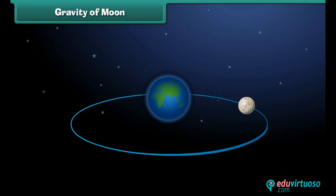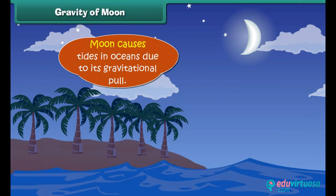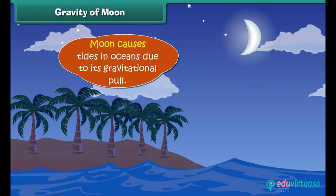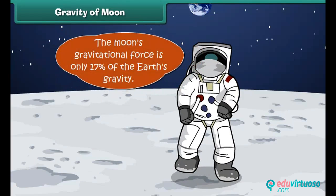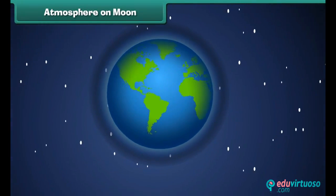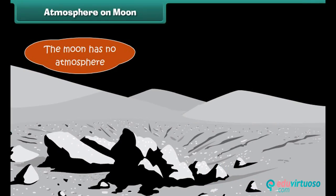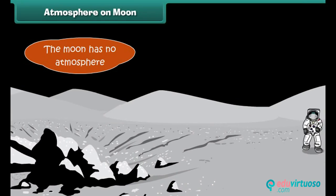Our moon is large enough to cause tides in the oceans due to its gravitational pull. You may be surprised to know that the moon's gravitational force is only 17% of Earth's gravity. For example, a 100-pound (45 kg) person would weigh only 17 pounds (7.6 kg) on the moon.